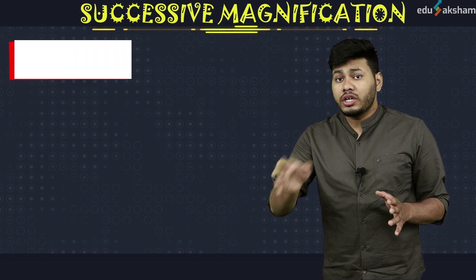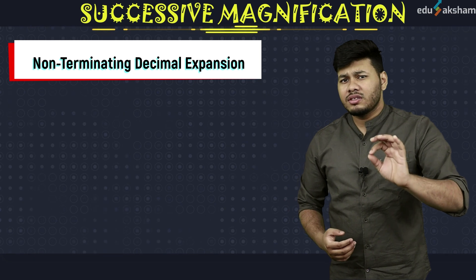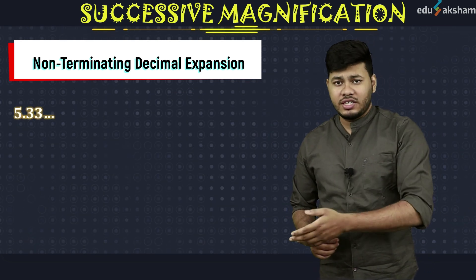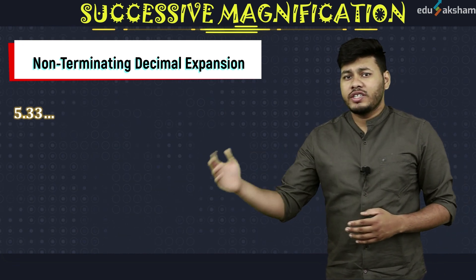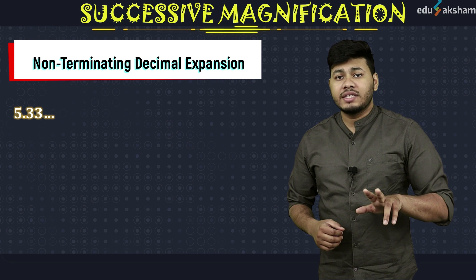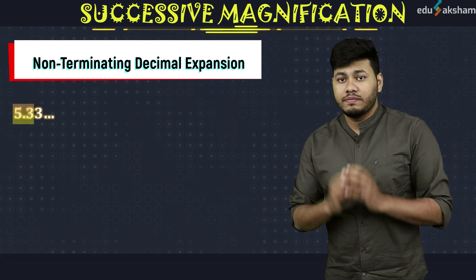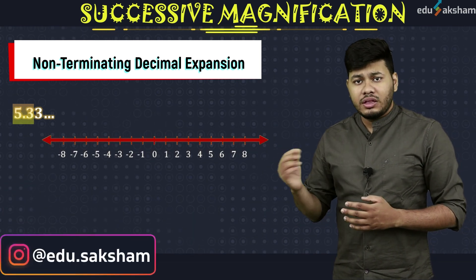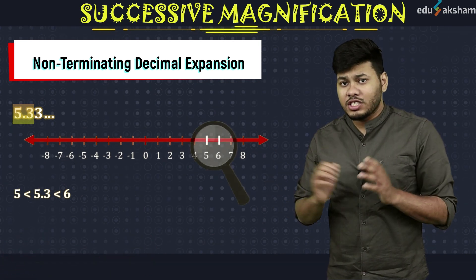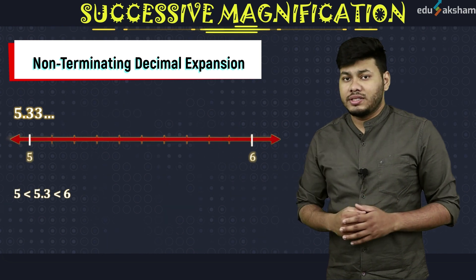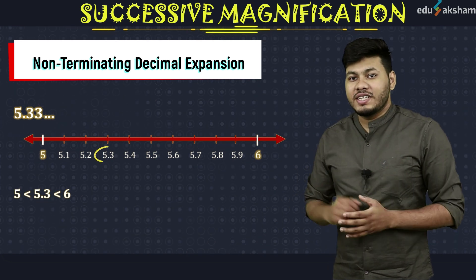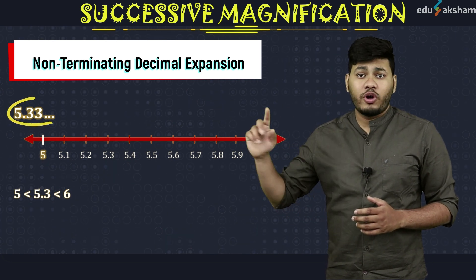But what if we are given a non-terminating decimal expansion? Is it possible to find such a decimal expansion on the number line using this process? Let us take the example of a non-terminating repeating decimal expansion: 5.333... We will again consider only up to one decimal place, which is 5.3. We can see integers on the number line, and 5.3 lies between 5 and 6. So we will magnify this portion, divide it into 10 equal parts, and mark them as 5.1, 5.2, 5.3 and so on up to 5.9. You can see 5.3 right here. But is it the number we actually want to find? No — it's 5.333...